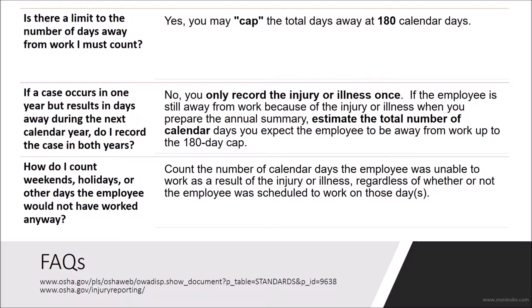If the employee is still away from work because of the injury when you prepare your form, then you must estimate the total number of calendar days you expect the employee to be away from work, up to the 180-day cap. For example, if an employee is injured in December and the doctor says the employee will be off work for three months with an expected return back to work on March 1st, then you would add the total number of days away starting with the date of injury through February 28th.